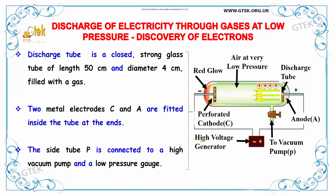We will now discuss the discharge of electricity through gases at lower pressure and the discovery of electrons. This discharge tube is a closed, strong glass tube of length 50 cm with a diameter of 4 cm, filled with gas at very low pressure. Here we have the perforated cathode, and a high voltage is applied to the tube. Here is the cathode and this one is the anode.